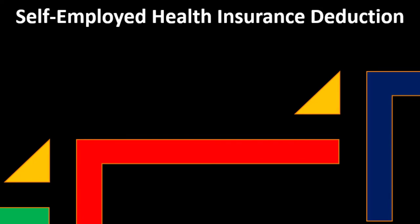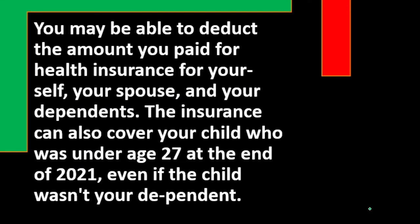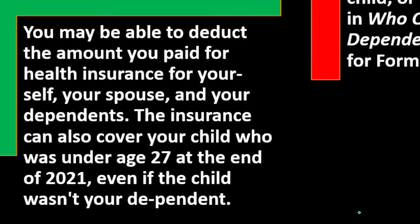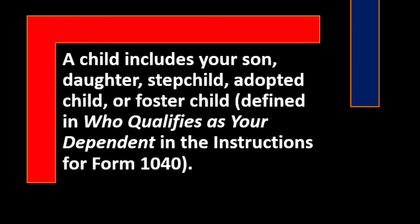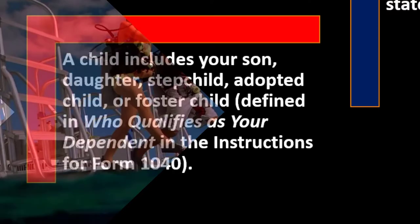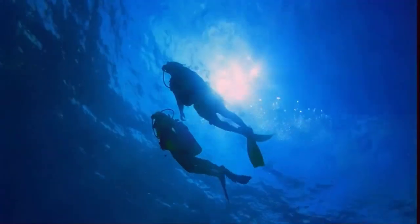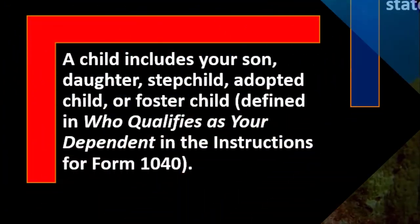Self-employed health insurance deduction: you may be able to deduct the amount you paid for health insurance for yourself, your spouse, and your dependents. The insurance can also cover your child who was under age 27 at the end of 2021, even if the child wasn't your dependent. A child includes your son, daughter, stepchild, adopted child, or foster child as defined in who qualifies as your dependent in the Form 1040 instructions.